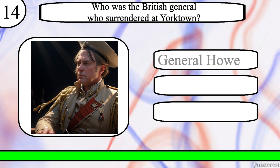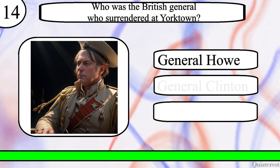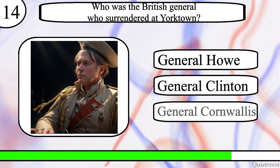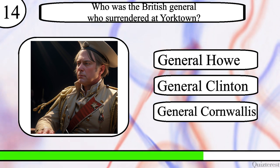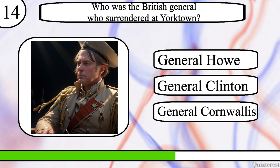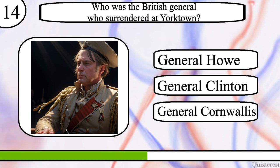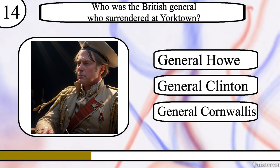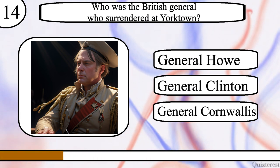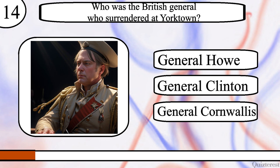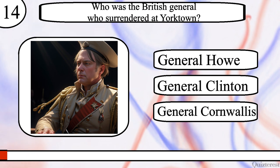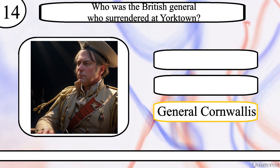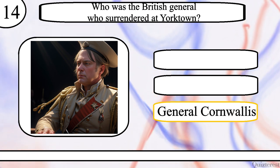Question 14. Who was the British general who surrendered at Yorktown? General Howe, General Clinton, or General Cornwallis? The correct answer is General Cornwallis.